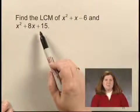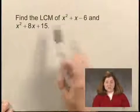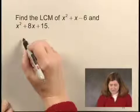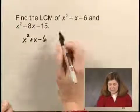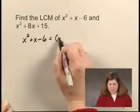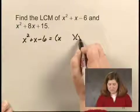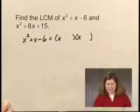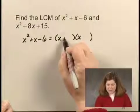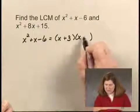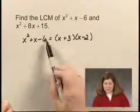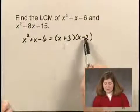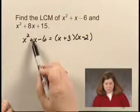The first step in finding a least common multiple is to factor each polynomial. x squared plus x minus 6 factors into two binomials. The first term of each is x. We have x plus 3, x minus 2, since 3 times 2 is negative 6 and 3 minus 2 is 1.